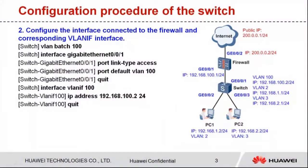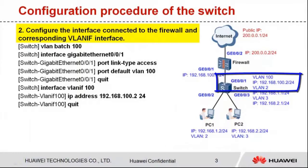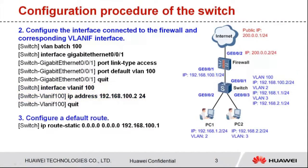Step 2: Configure the interface connected to the firewall as an access interface and add it to VLAN 100. Configure the corresponding VLAN-IF interface. The IP address of VLAN-IF 100 is 192.168.100.2. Step 3: Configure a default route. The next hop address of the default route is 192.168.100.1, which is the IP address of the firewall interface.